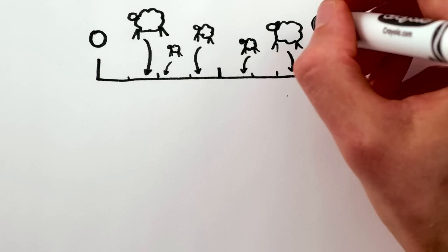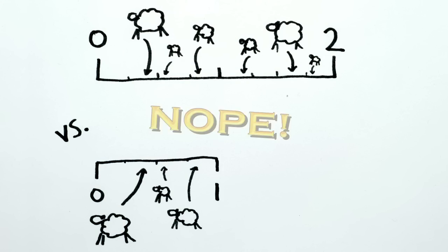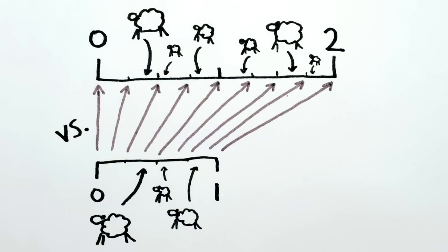Like, if you had a sheep for every number between zero and two, would that be more sheep than if you had one for every number between zero and one? Nope, because you can relate every number between zero and one to its double, giving you every number between zero and two.